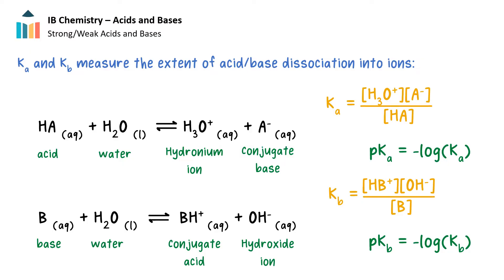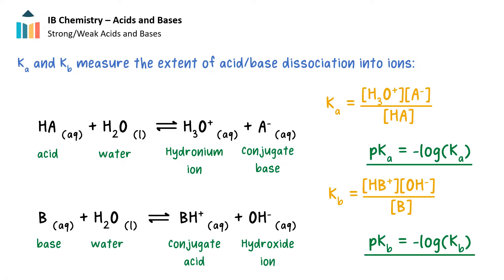And similarly for Kb, in a general equilibrium reaction of a base in water which dissociates into a conjugate acid and a hydroxide ion, the Kb is defined by this equation. The Kb is the concentration of the conjugate acid times the concentration of hydroxide ions divided by the concentration of the base, all at equilibrium. Just like for pH and pOH, we can take the negative log of the Ka and Kb to get pKa and pKb respectively. This is useful sometimes in case our Ka's or Kb's are really big or small numbers.